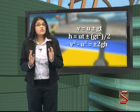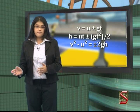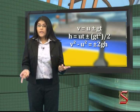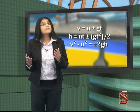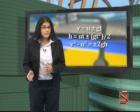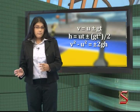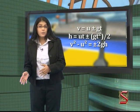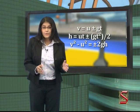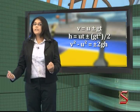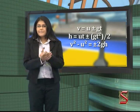Number three: v squared minus u squared is equal to plus or minus 2gh, where v is final velocity, u is initial velocity, g is force of gravity, and h is displacement.